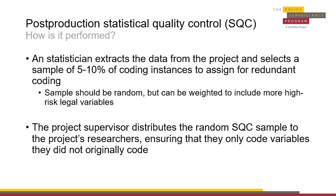In order to conduct statistical quality control, a statistician can use statistical software such as Excel or Stata to create a random sample of coding instances, or individual responses, for 5-10% of the coding instances in the dataset. The number of coding instances in a dataset can be identified by multiplying the total number of possible responses by the number of records in that dataset. For example, a dataset with 100 records and 20 potential responses overall has 2,000 coding instances in total — 100 times 20.